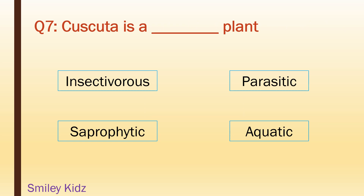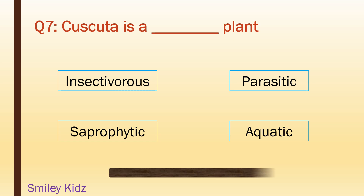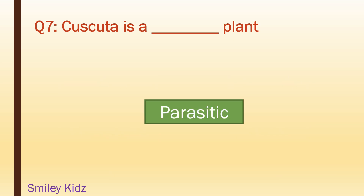Cuscuta is a ___ plant: insectivorous, parasitic, saprophytic, aquatic. Your time starts now. Your time is up. And the right answer is parasitic.